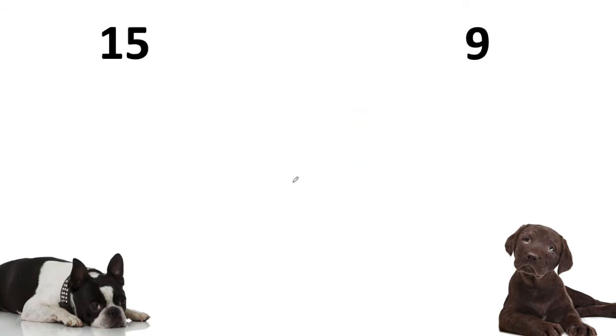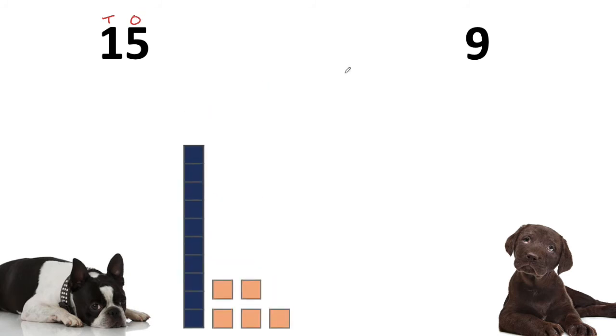This time, Bruno and Opal are comparing 15 and 9. We know that 15 has one ten and five ones, and the number 9 has nine single ones and zero tens.